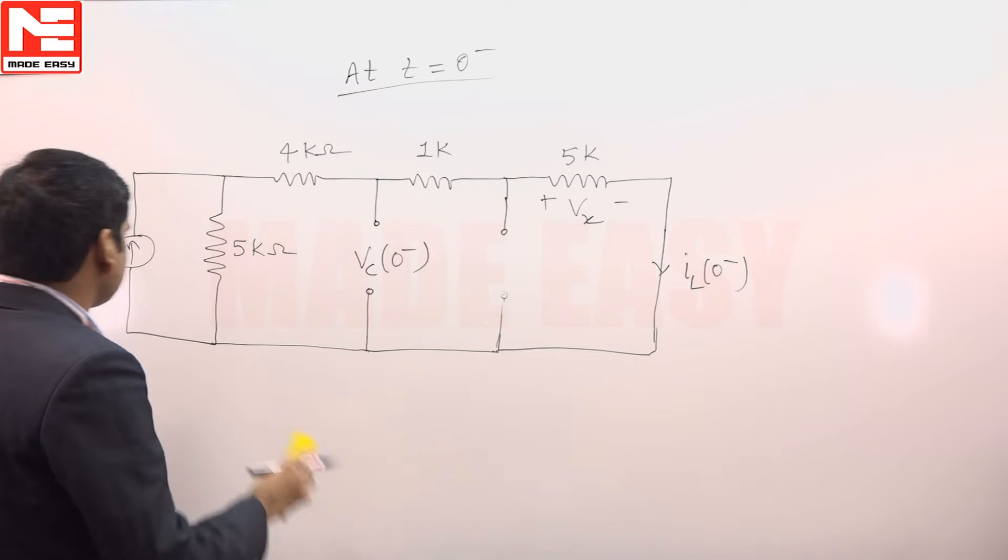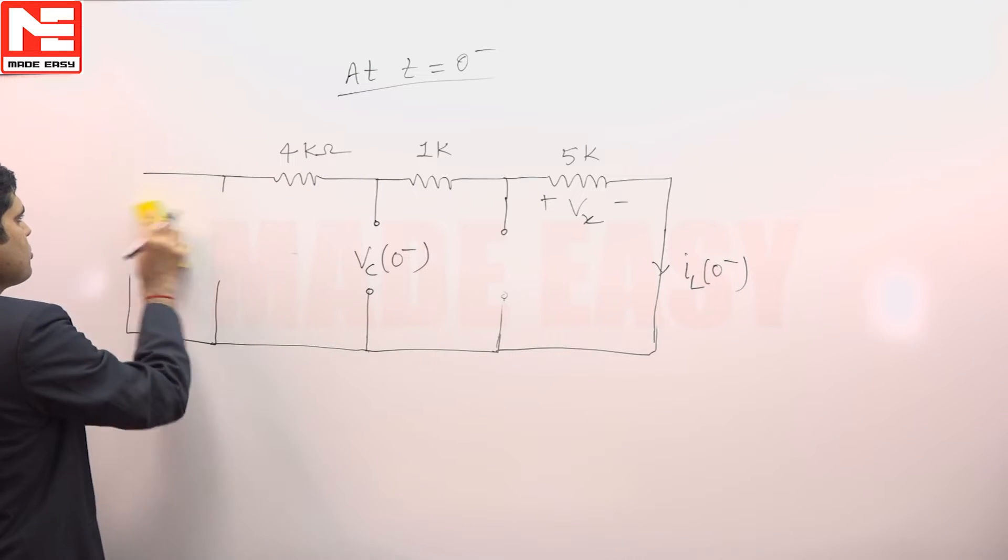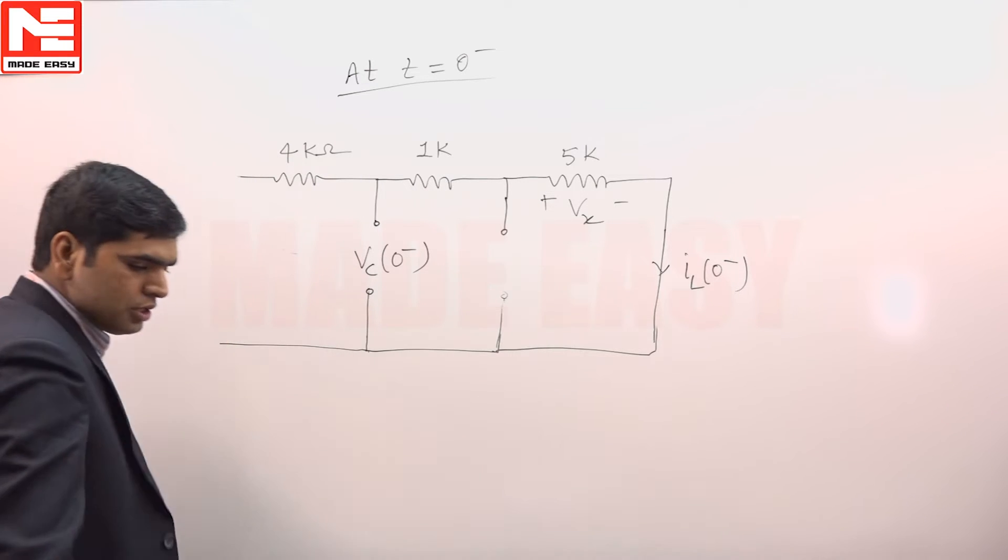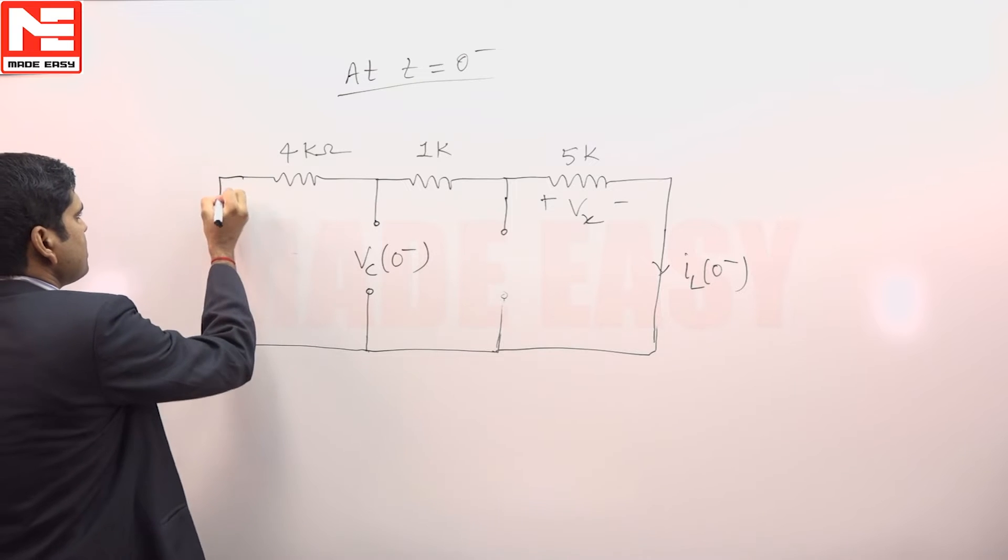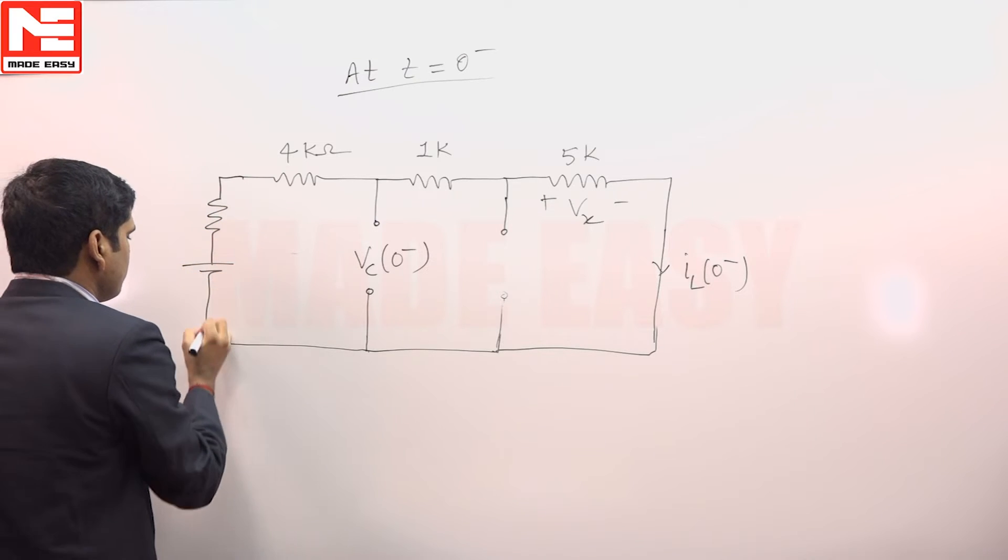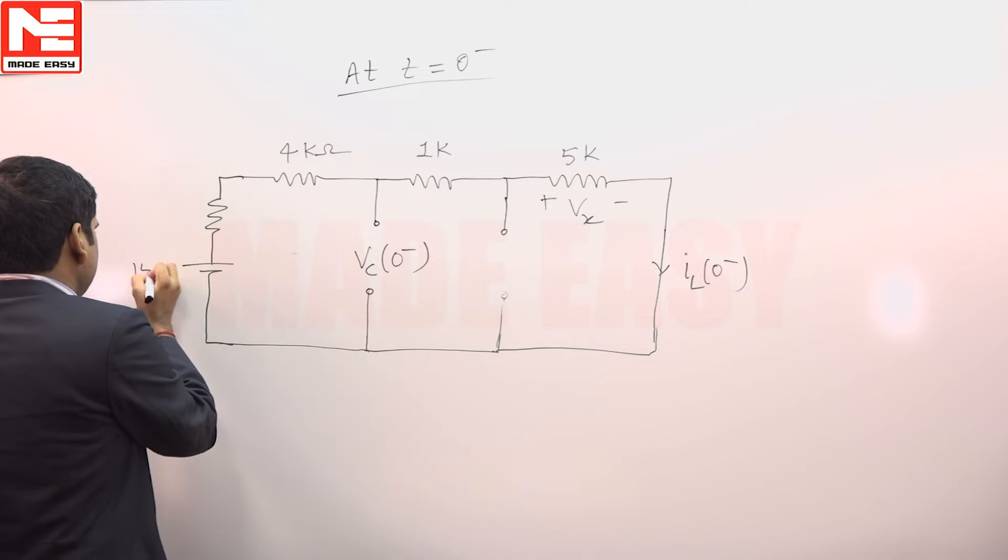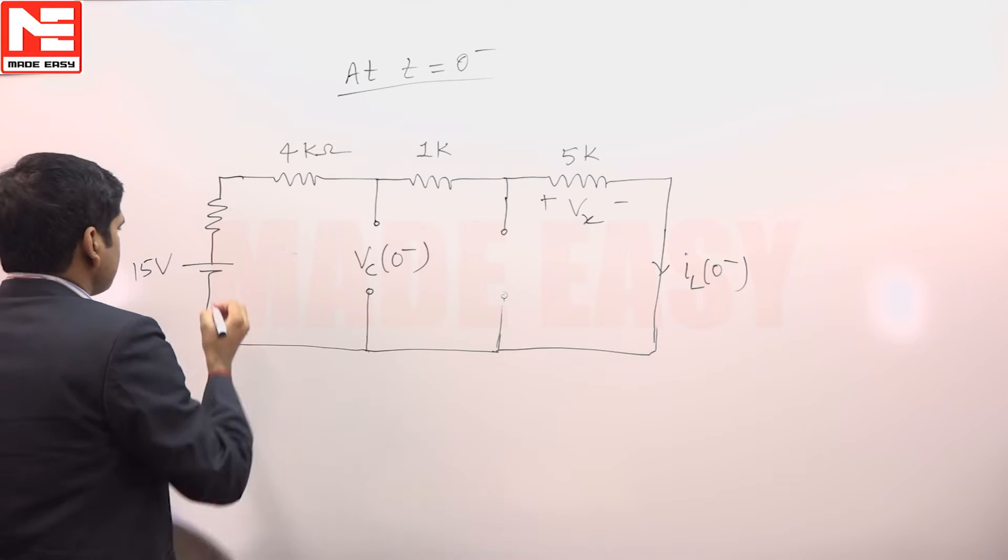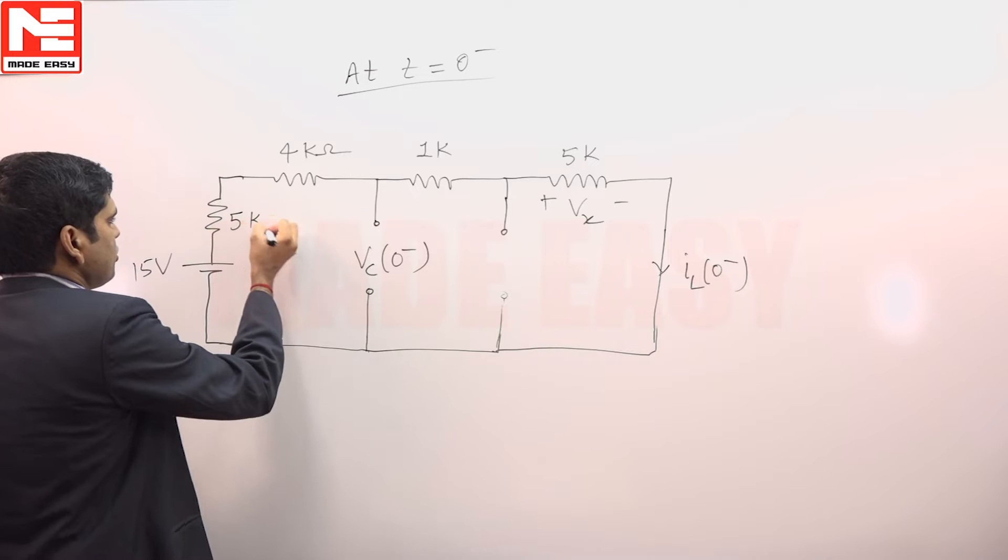We can convert this current source into a voltage source and a series resistance. When converted, this is 5 kilo ohm and a voltage. This will get converted into 15 volt and this resistance is equal to 5 kilo ohm.